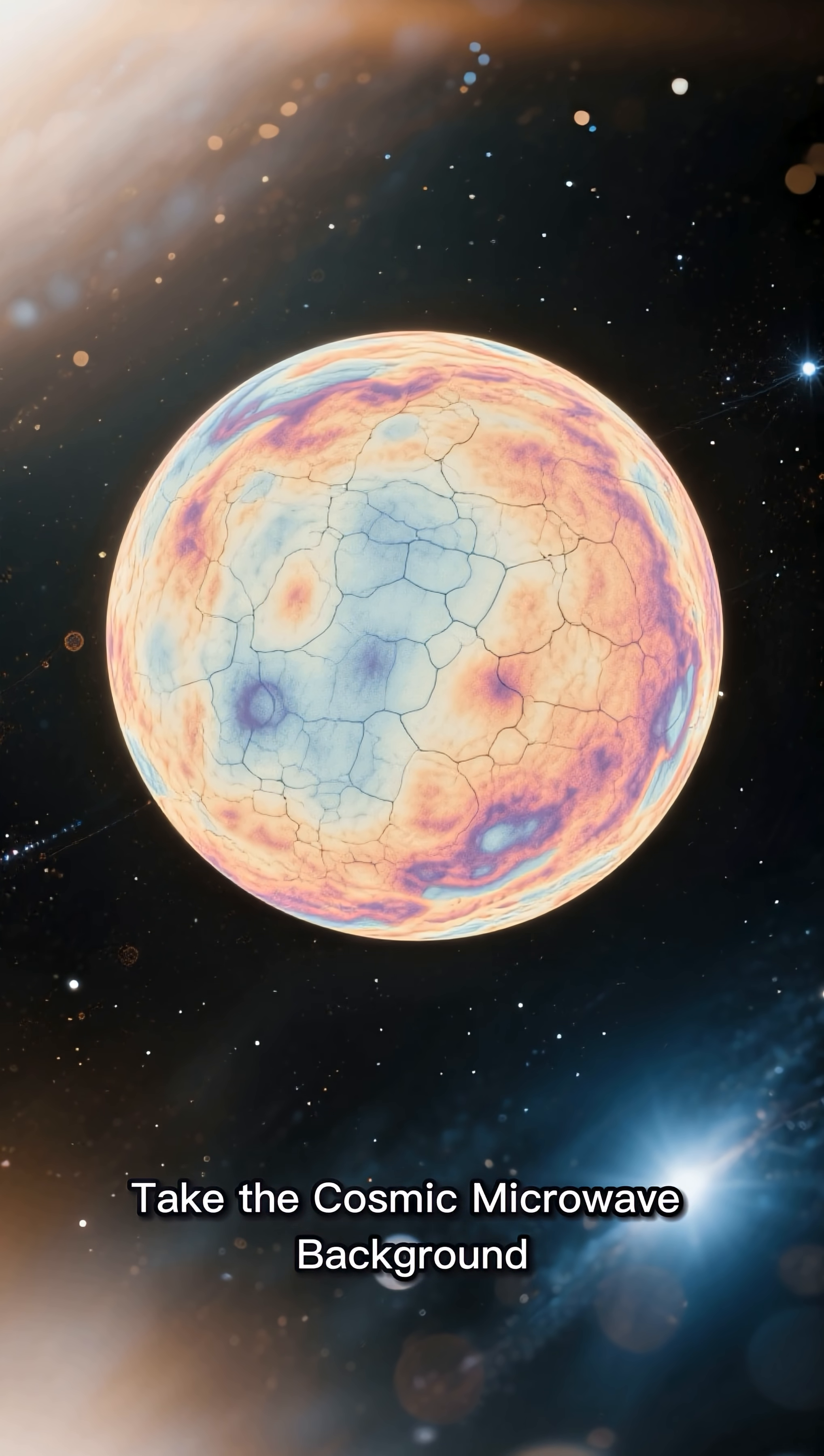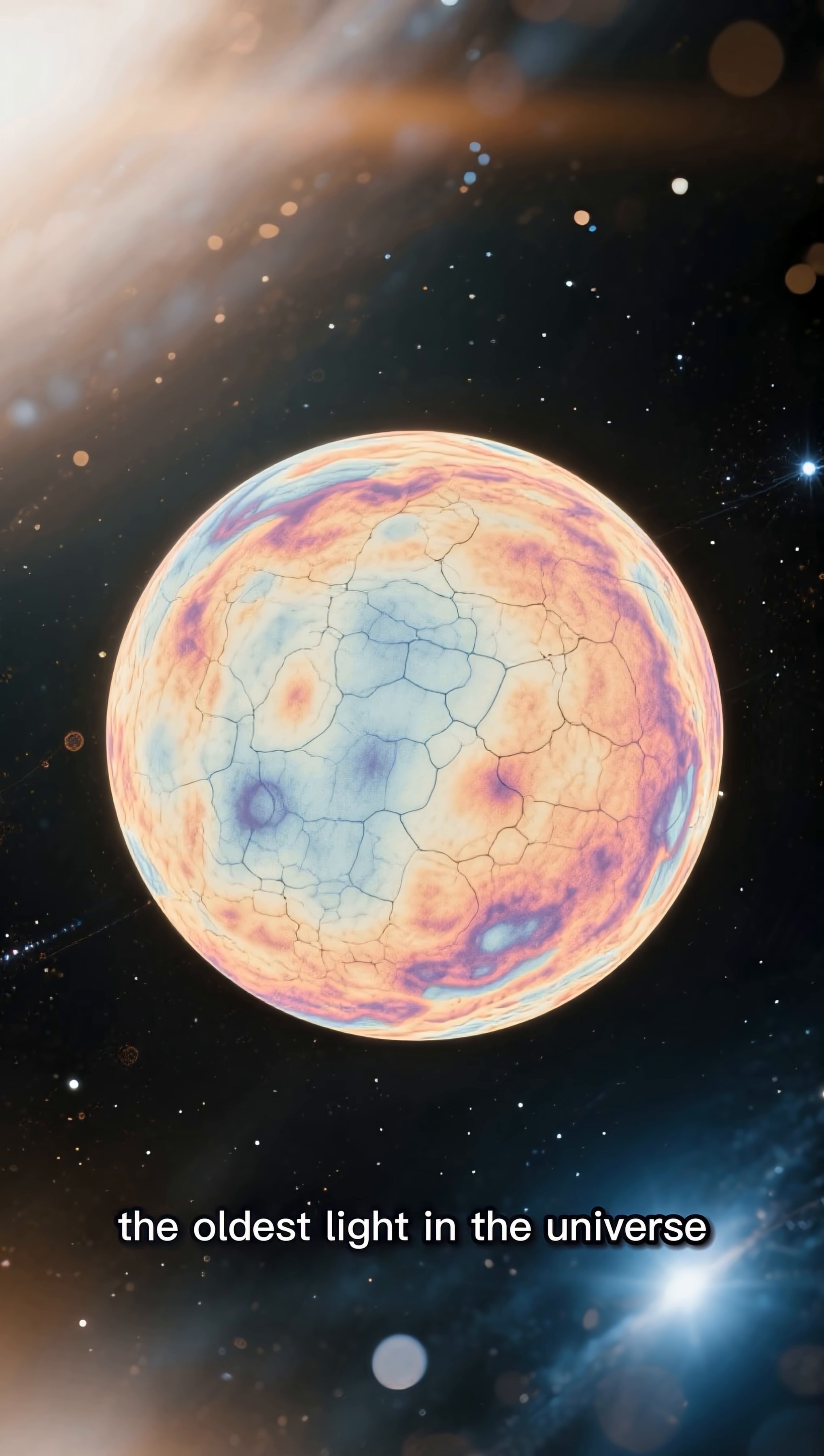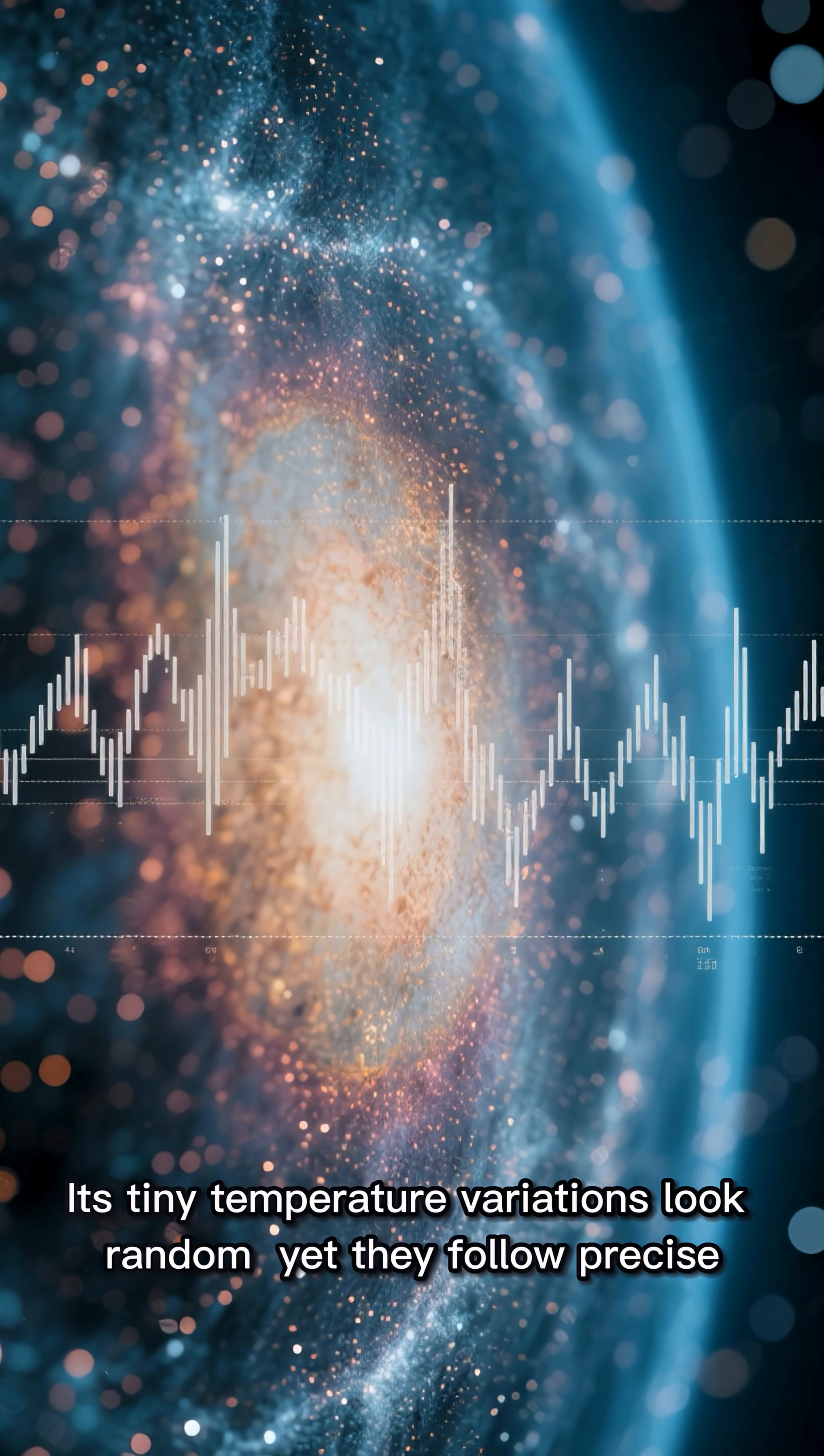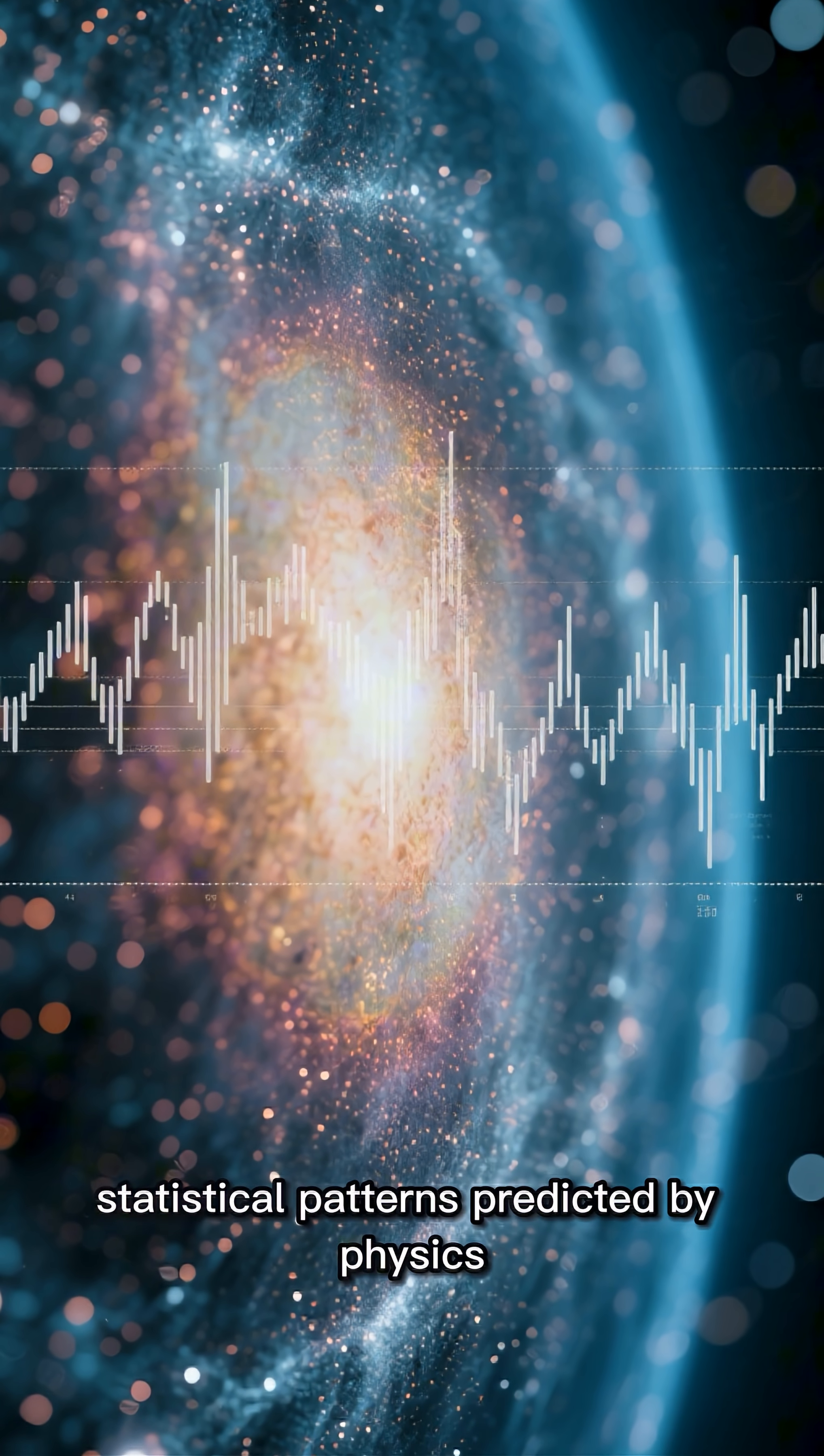Take the cosmic microwave background, the oldest light in the universe. Its tiny temperature variations look random, yet they follow precise statistical patterns predicted by physics.